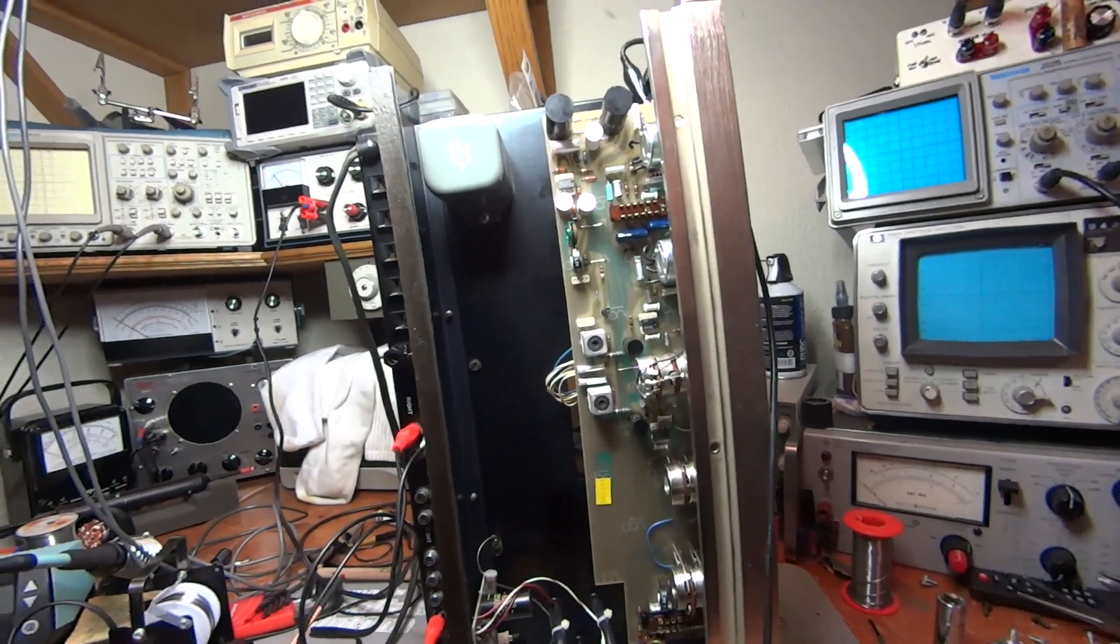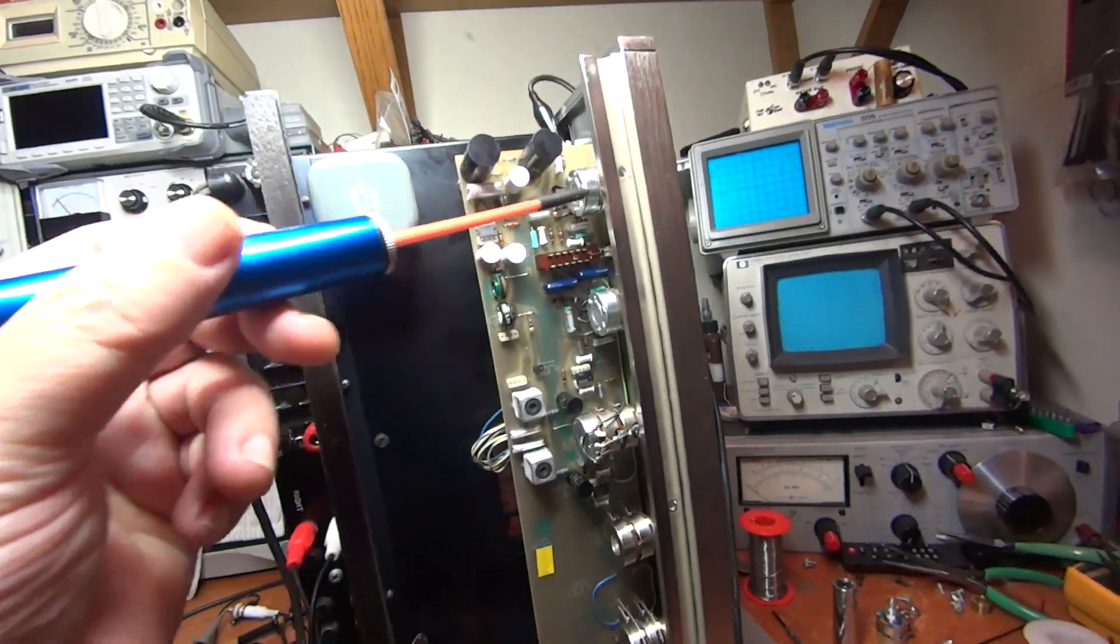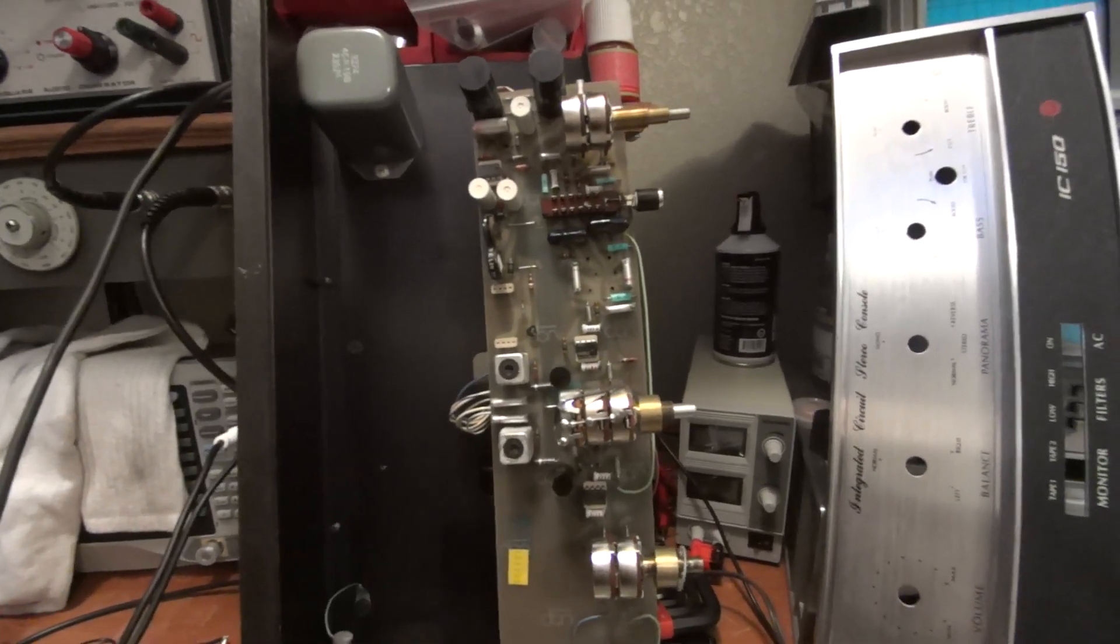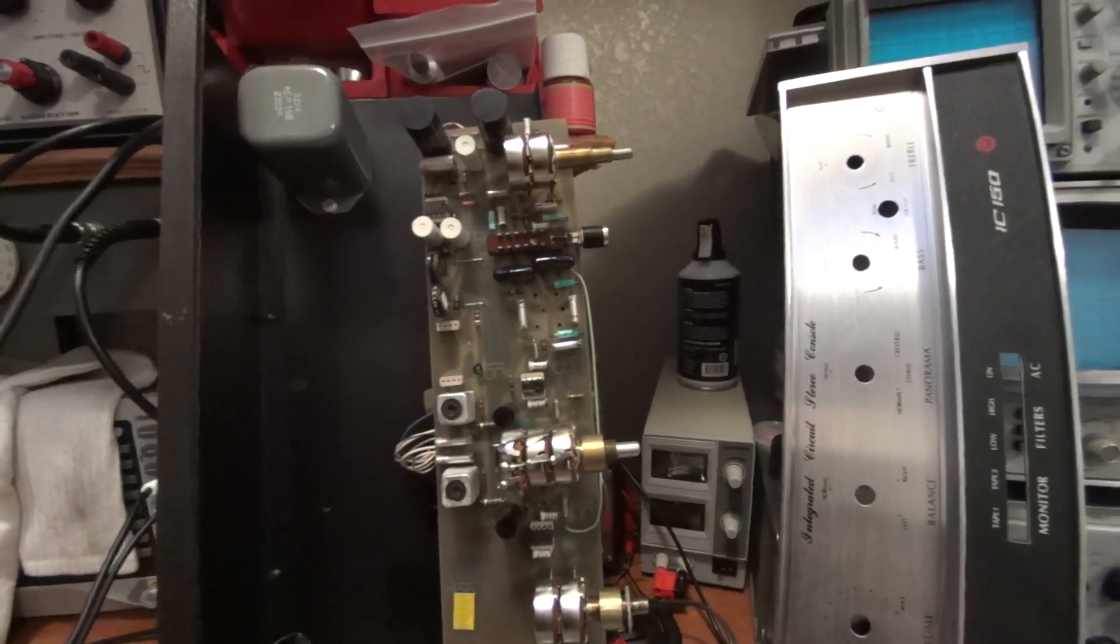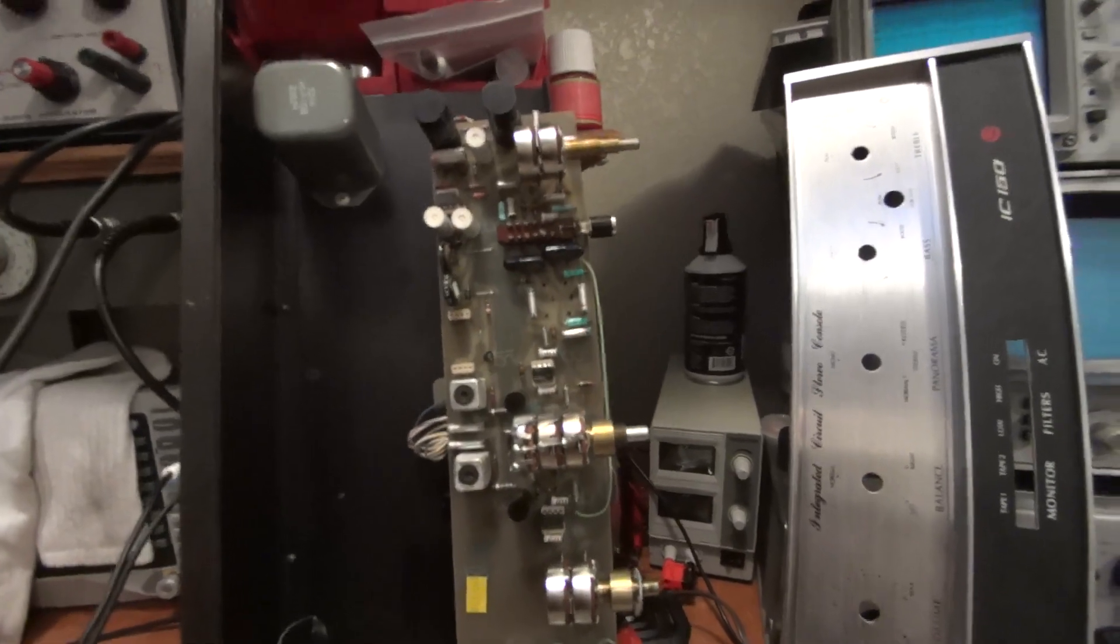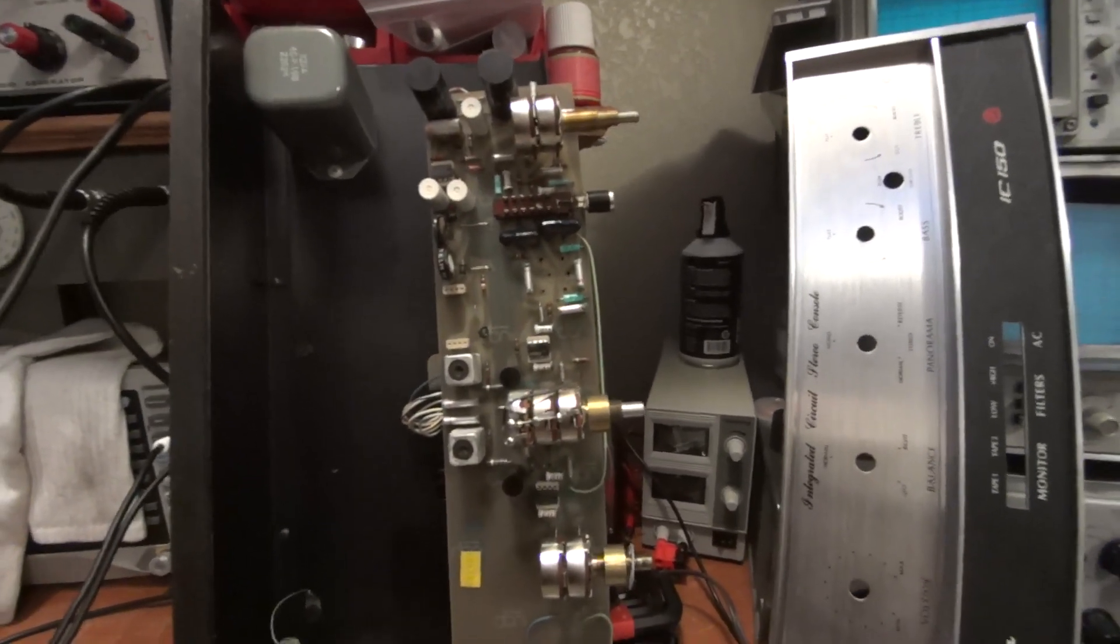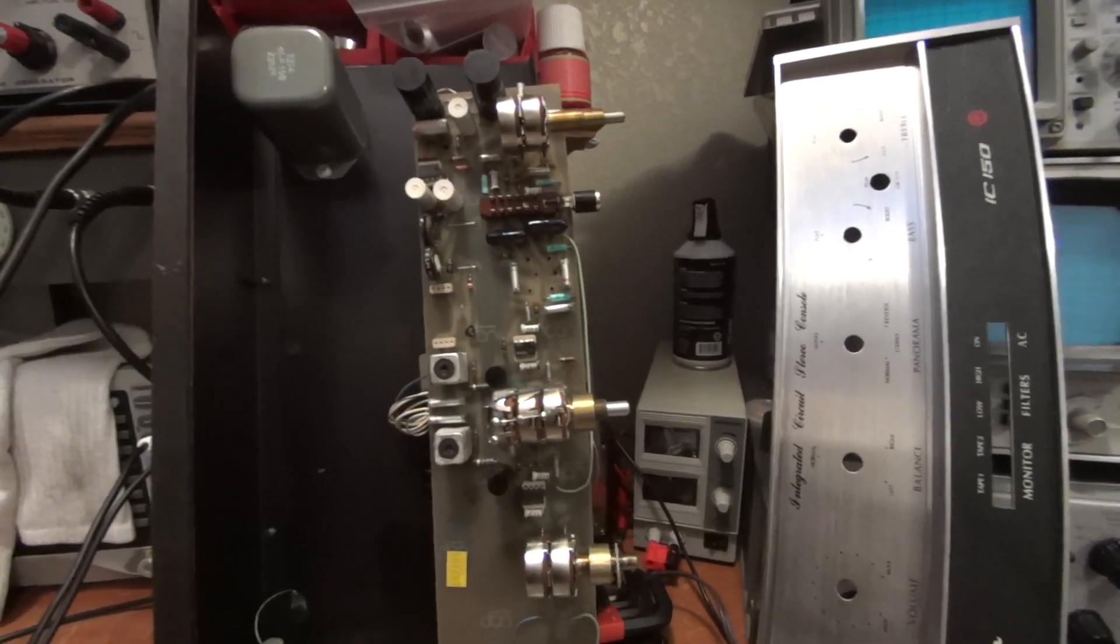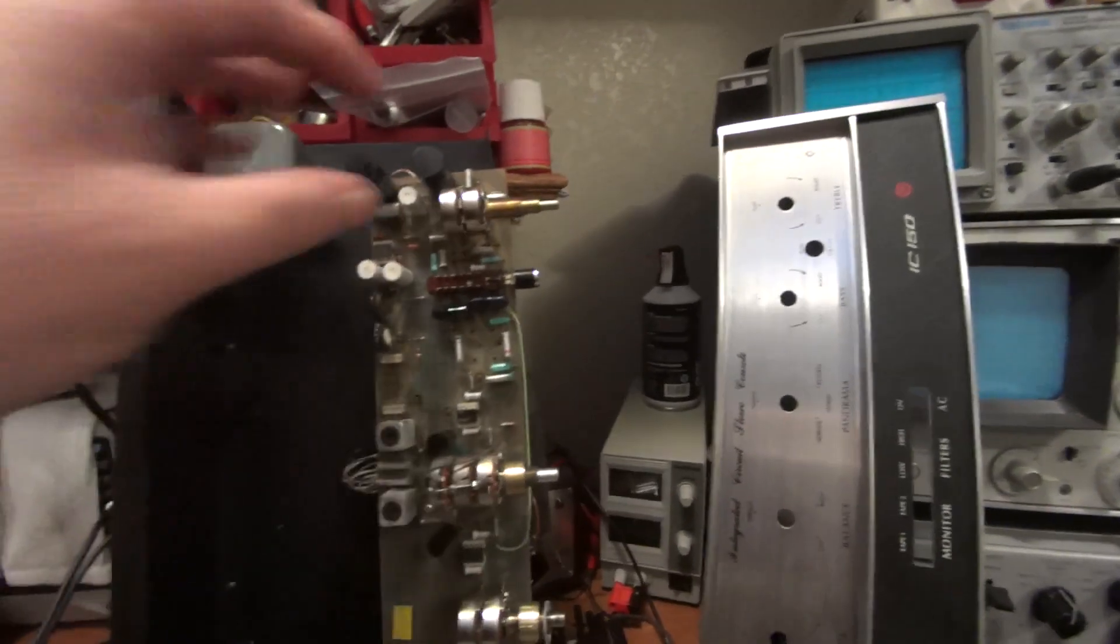The last thing that was done here was two of these dual gang potentiometers were replaced. After I started putting signal to it with the output working, I moved the bass control and one side of the amplifier went into oscillation. At first I thought maybe it's got a bad capacitor, but before I started just replacing capacitors for fun, I thought I had to take some measurements of the potentiometers.